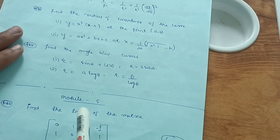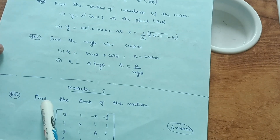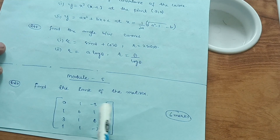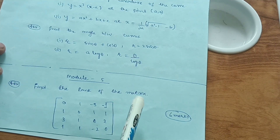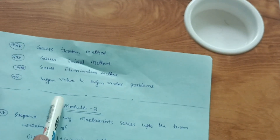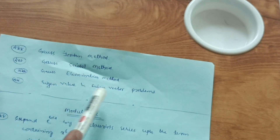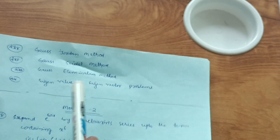Module 5 is the passing module — you can fully score here, getting 20 out of 20 with practice. The first question will definitely be: find the rank of the matrix. A matrix like [0, 0, 1, −3; −1, 1, 0, 1; 1, ...] will be given — it may be 3×3 or 4×4. Find the rank by making the lower triangular matrix entries zero. This carries six marks. Then focus on Gauss-Seidel method, Gauss elimination method, and eigenvalue and eigenvector problems to grab all 20 marks in this module.